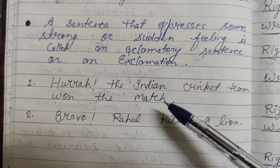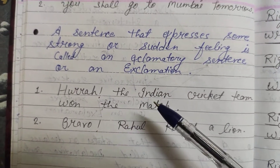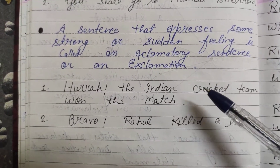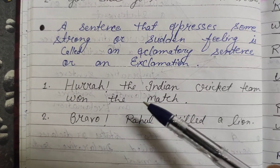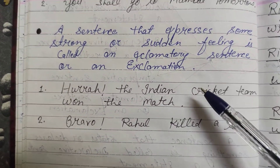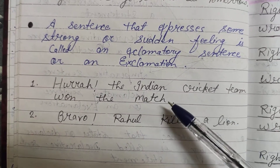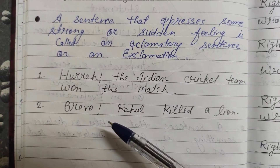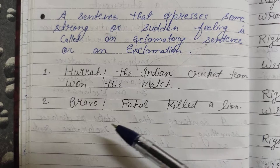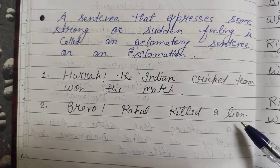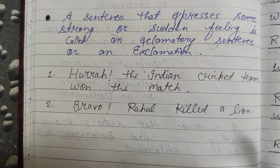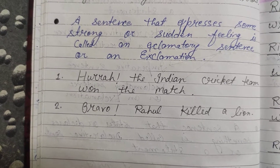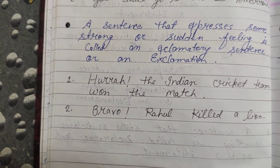'Hurrah! The Indian cricket team won the match.' — Yahan pe khushi ka ek bhaav vyakt kiya ja raha hai, happy feeling express ki ja rahi hai. 'Bravo, Rahul!' — yahan par ek sad moment show kiya ja raha hai. So in such a way we make exclamatory sentences.